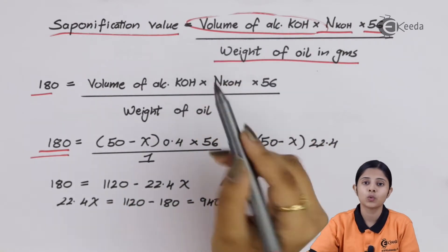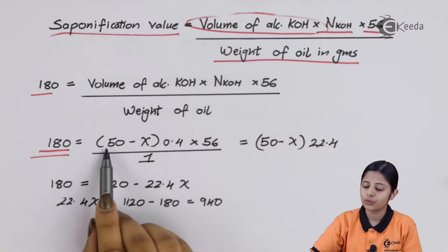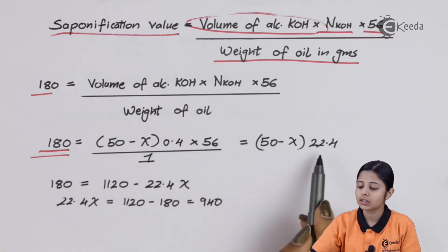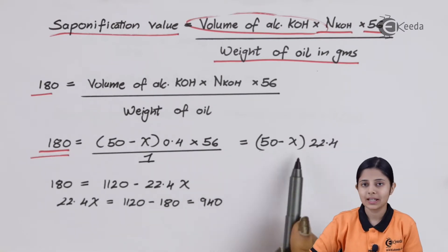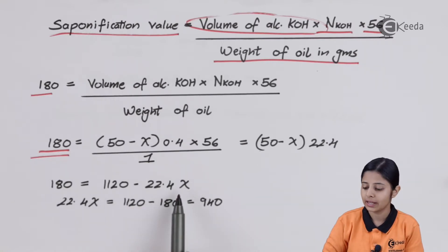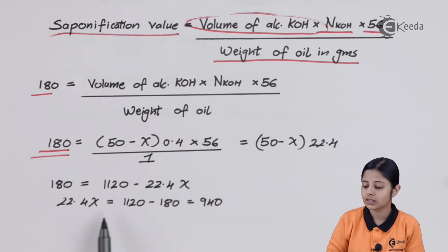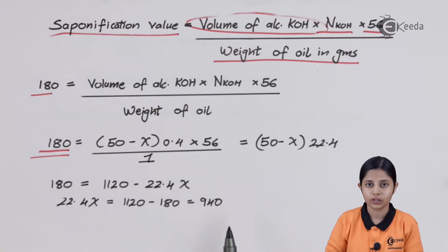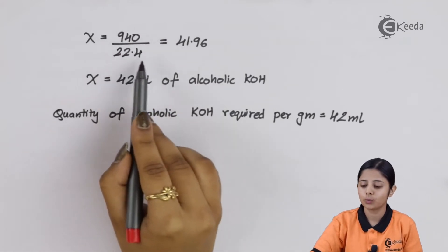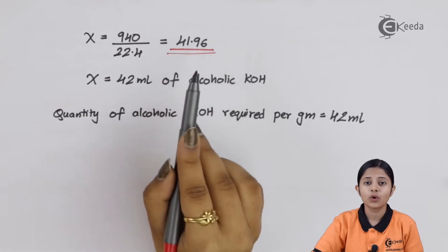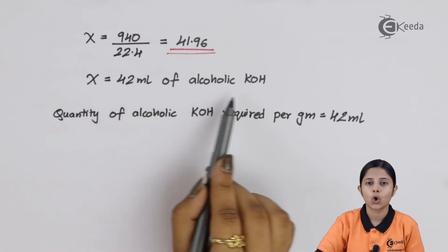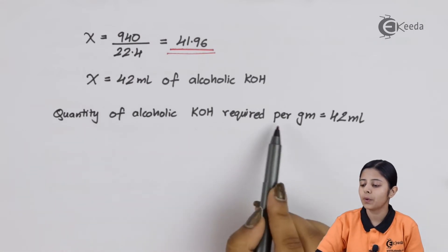We write the volume of KOH as (50 − x) because this represents the KOH volume with respect to HCl and x is the back titration reading we need. So: 180 = (50 − x) × 0.4 × 56 / 1, which gives 180 = (50 − x) × 22.4, expanding: 180 = 1120 − 22.4x. Solving: 22.4x = 1120 − 180 = 940, so x = 940 / 22.4 ≈ 41.96 ≈ 42.